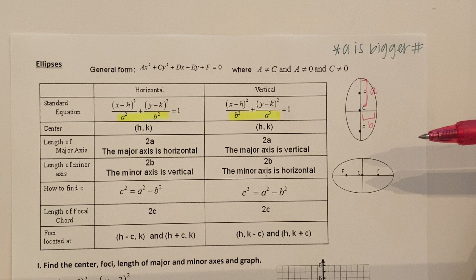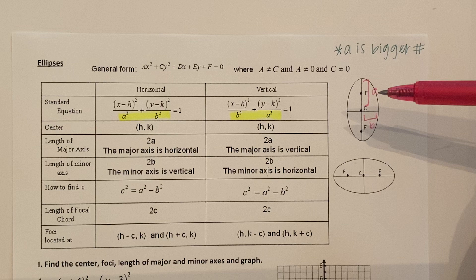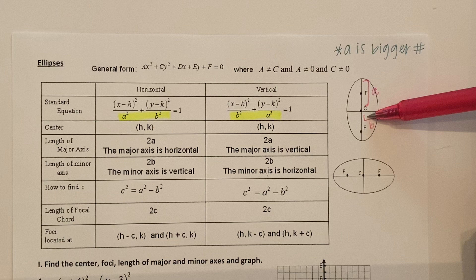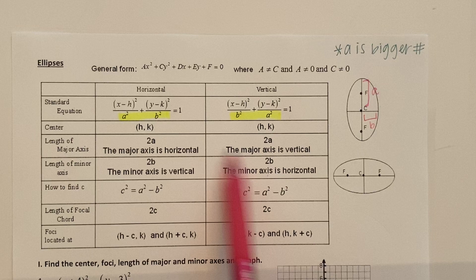The major axis is the longer one. Minor axis is the shorter one. So if I'm gonna find the length of this whole major axis I need 2a. If I want the minor axis I need 2b.